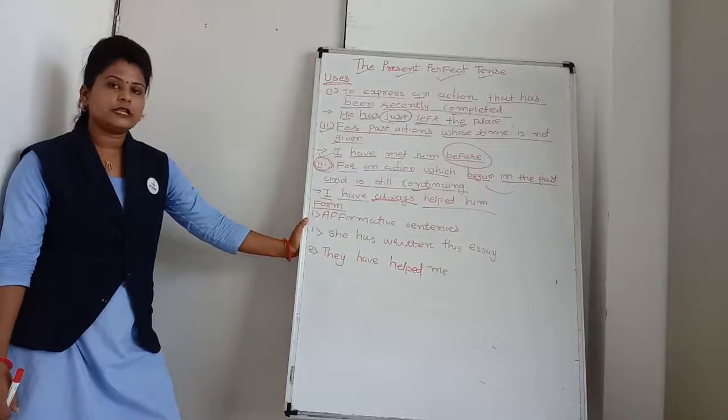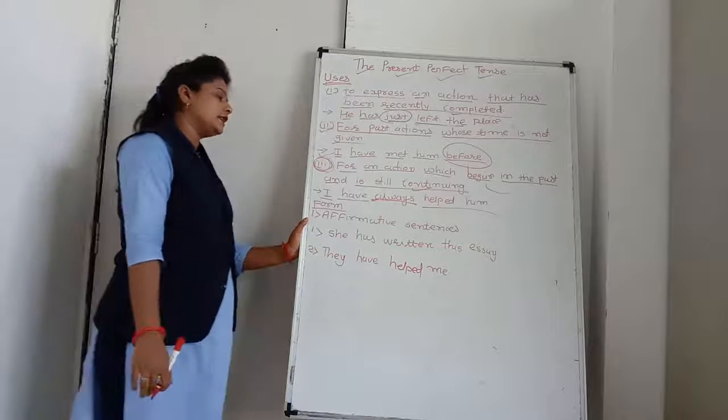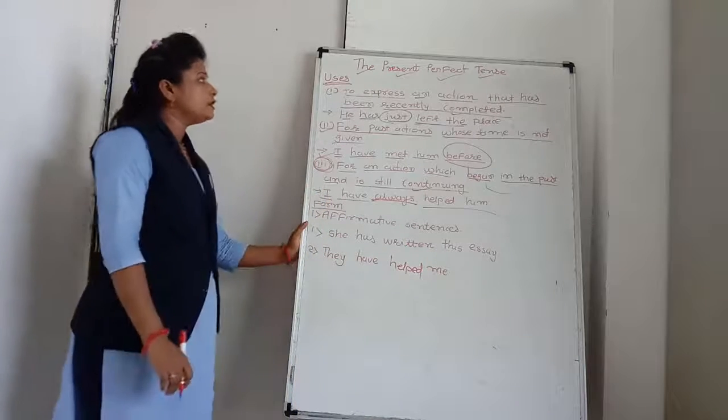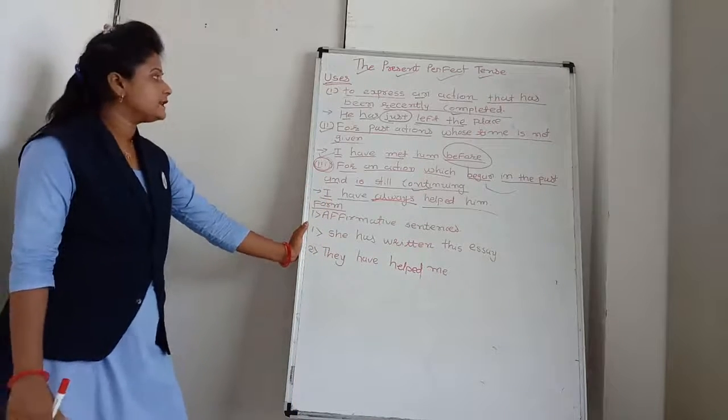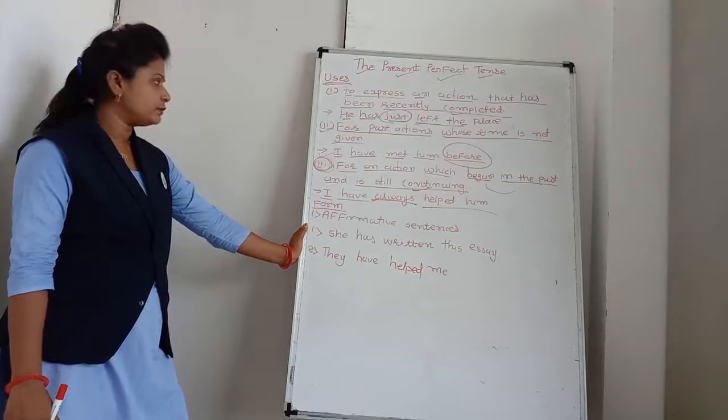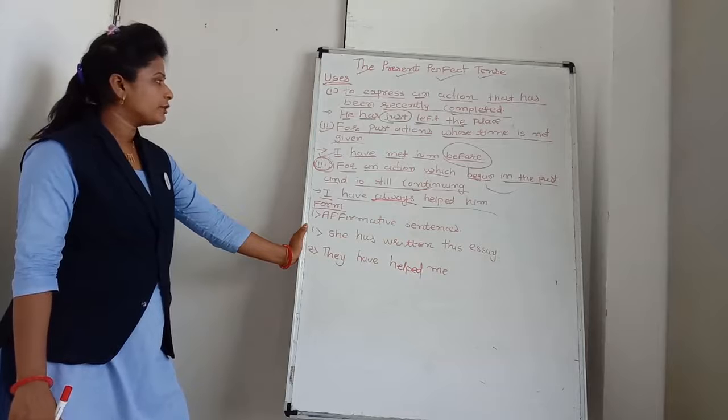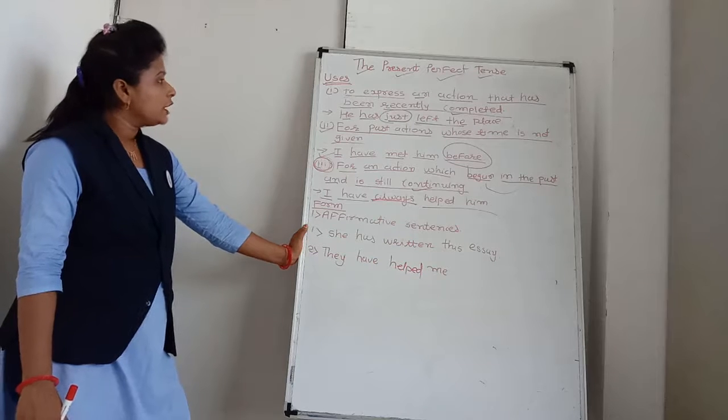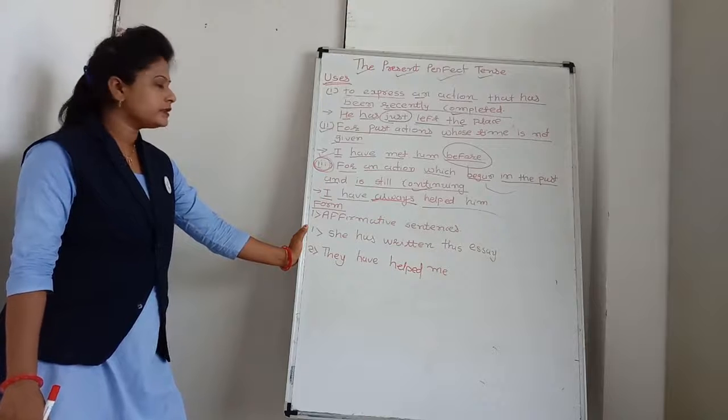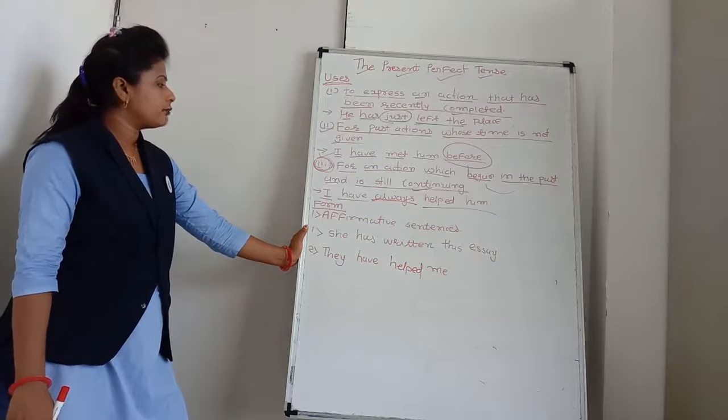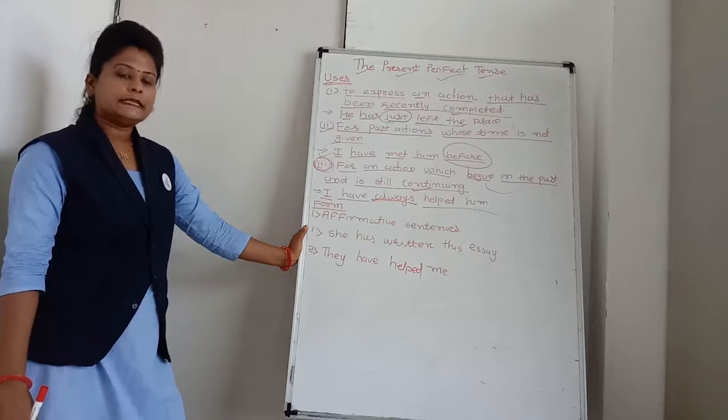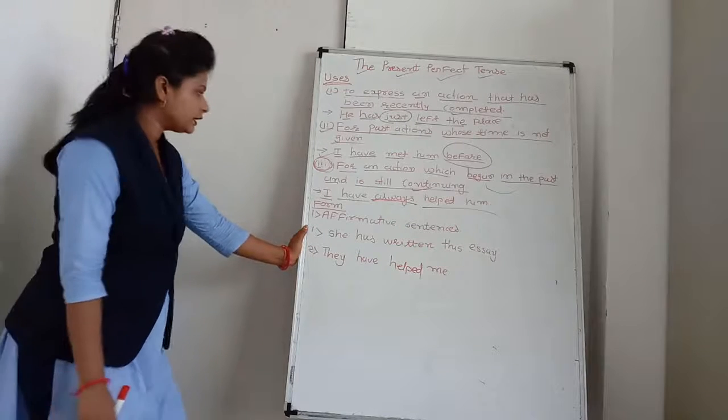The present perfect tense is used to express an action that has been recently completed. The present perfect tense is used for past actions whose time is not given. And the present perfect tense is used for actions which began in the past and still continuing.